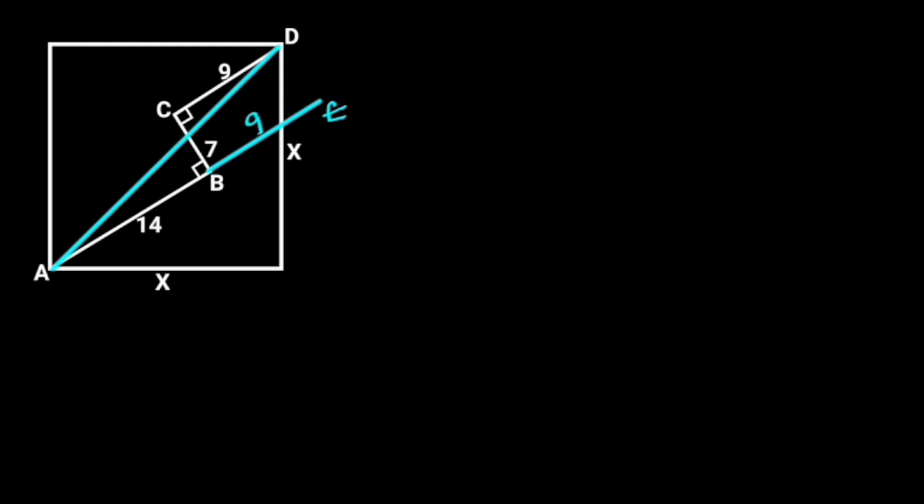Next, if we draw another line parallel to line BC from D to E, notice that this line will be equal to line BC. If that is the case, we can say that line DE is equal to 7 units. Since this is a right angle, this will also be a right angle.